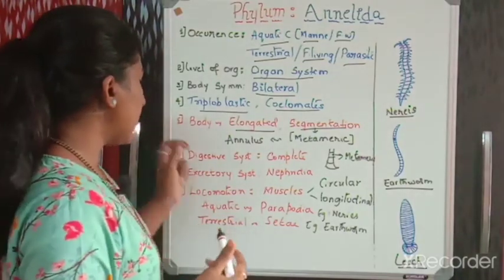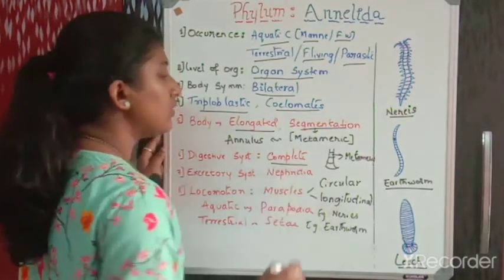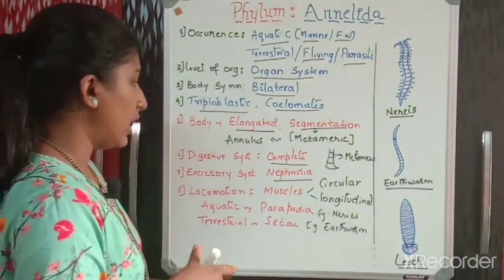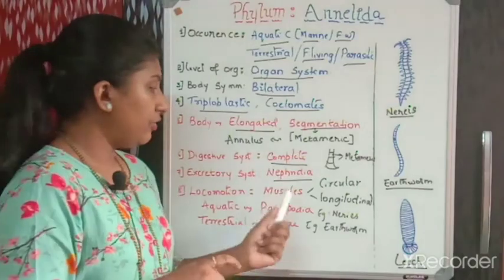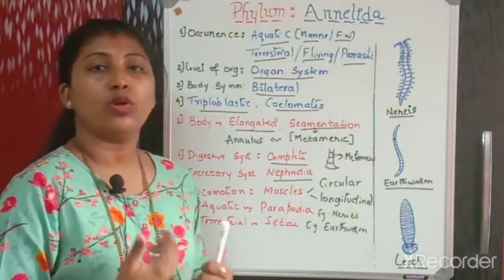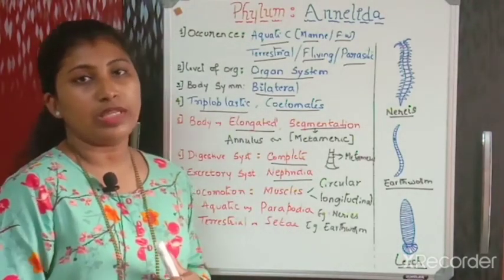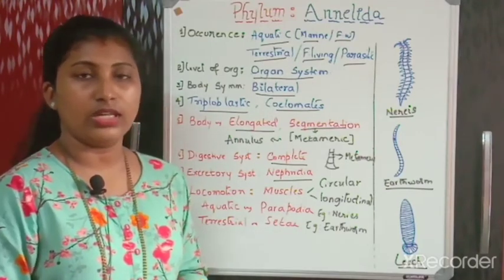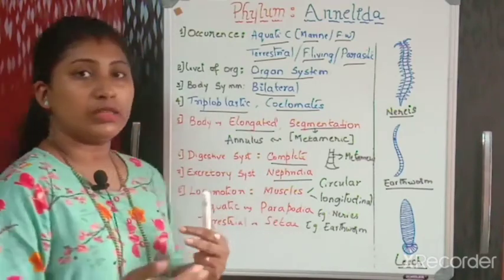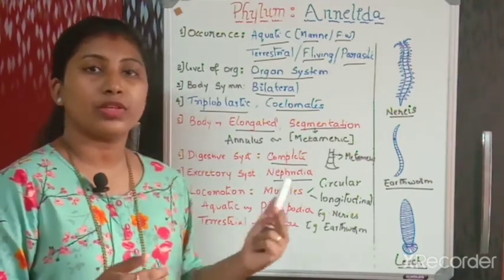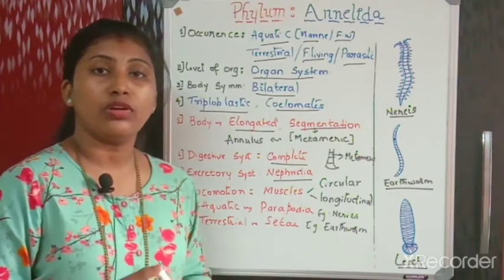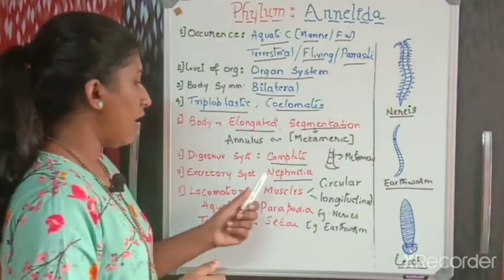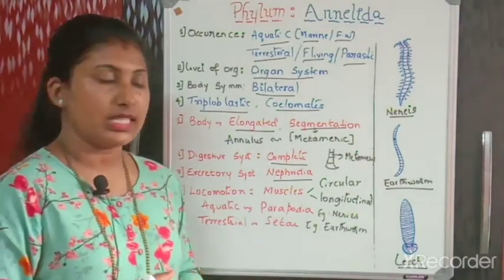The digestive system here is complete. The excretory system has a special structure called nephridia. With the help of nephridia the unwanted substances are released out. In Platyhelminthes there were flame cells for excretion, in Aschelminthes there was the excretory pore, and in Annelida they have nephridia as the excretory system.